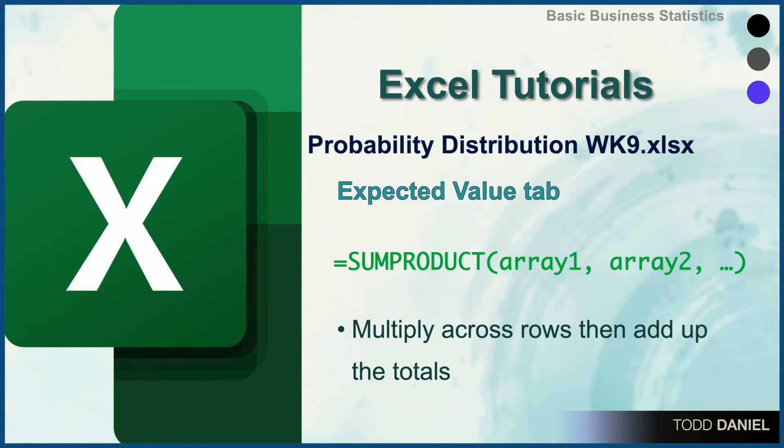We will begin by creating a frequency table, calculating probabilities, and then using the sum product formula to multiply across rows and eventually add up the totals.